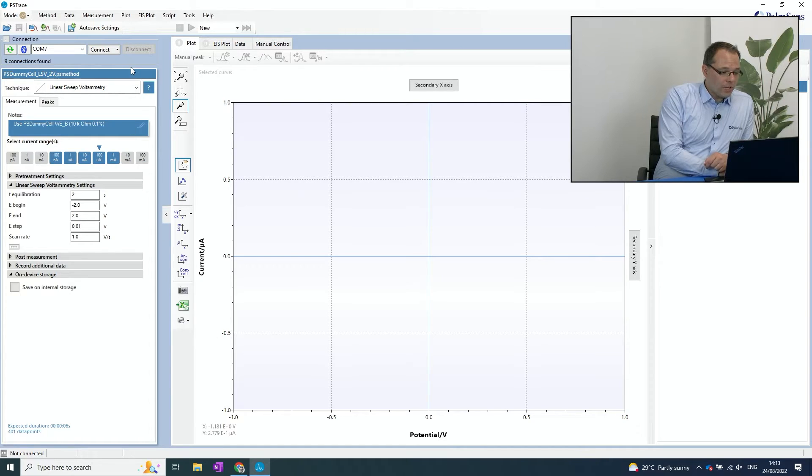So to connect the instrument via Bluetooth, I'm pressing this Bluetooth button and then the software searches for Bluetooth instruments. If you don't see the Bluetooth button, just go to Tools, General Settings and switch on the Bluetooth.